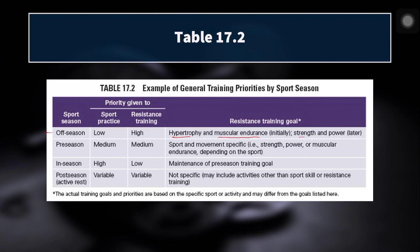We can start developing strength in the off-season and then touch on power later in the off-season. As we get into pre-season and sport practice increases in priority, resistance training priority decreases slightly and we start to incorporate more sport-specific movements. So instead of just back squatting, maybe we're also doing unilateral work for an athlete who needs to cut or sprint — which is a one-leg-at-a-time, ballistic or plyometric type of movement — incorporating things more similar to the movement analysis we made for the sport.